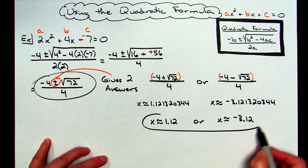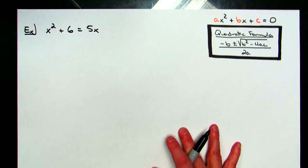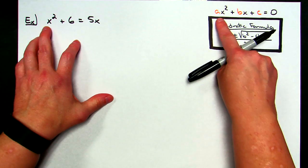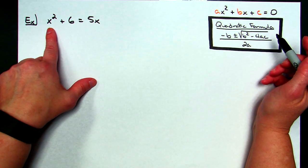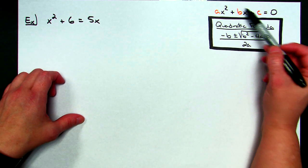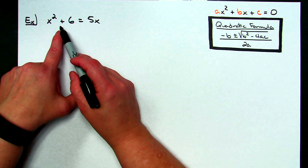We generally get two answers for each of these. Let's take a look at a second example that's not as straightforward. We've got x squared plus 6 equals negative 5x. This doesn't match the standard quadratic equation form, so I need to move all terms to the left. I want the x squared term first, then the x term, then the constant.